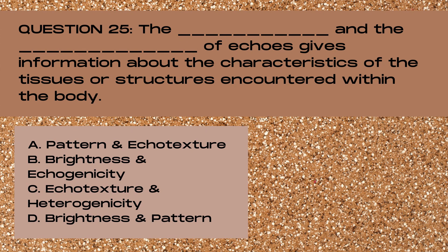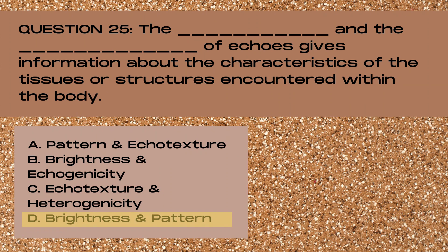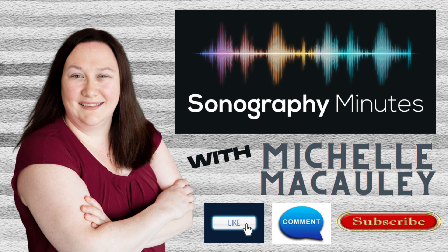Question 25. The blank and the blank of echoes gives information about the characteristics of the tissues or structures encountered within the body. A. Pattern and echo texture, B. Brightness and echogenicity, C. Echotexture and heterogenicity, or D. Brightness and pattern. And the answer is D. Brightness and pattern. The pattern and the brightness of echoes gives us information about the characteristics of the tissues or structures that the sound wave encountered within the body. When the echoes or reflections return to the transducer, we can use information about the pattern and brightness to determine the features of the tissue type that the echoes returned from.